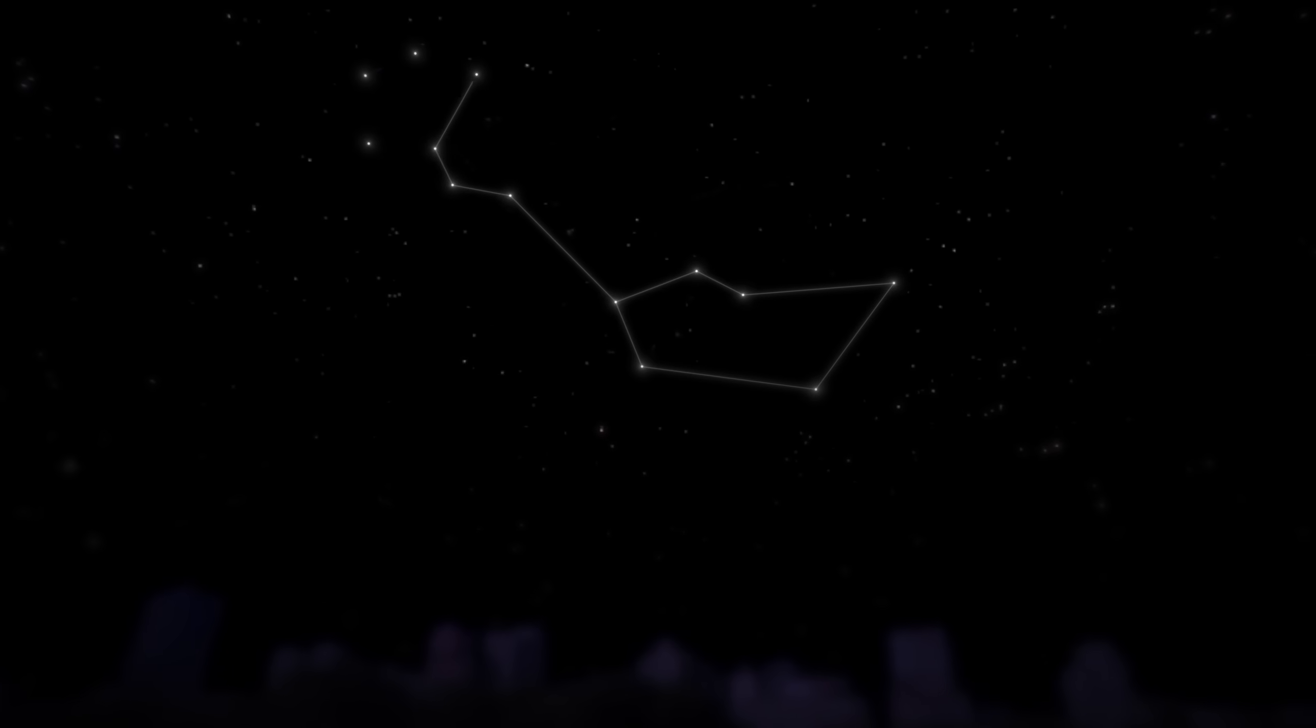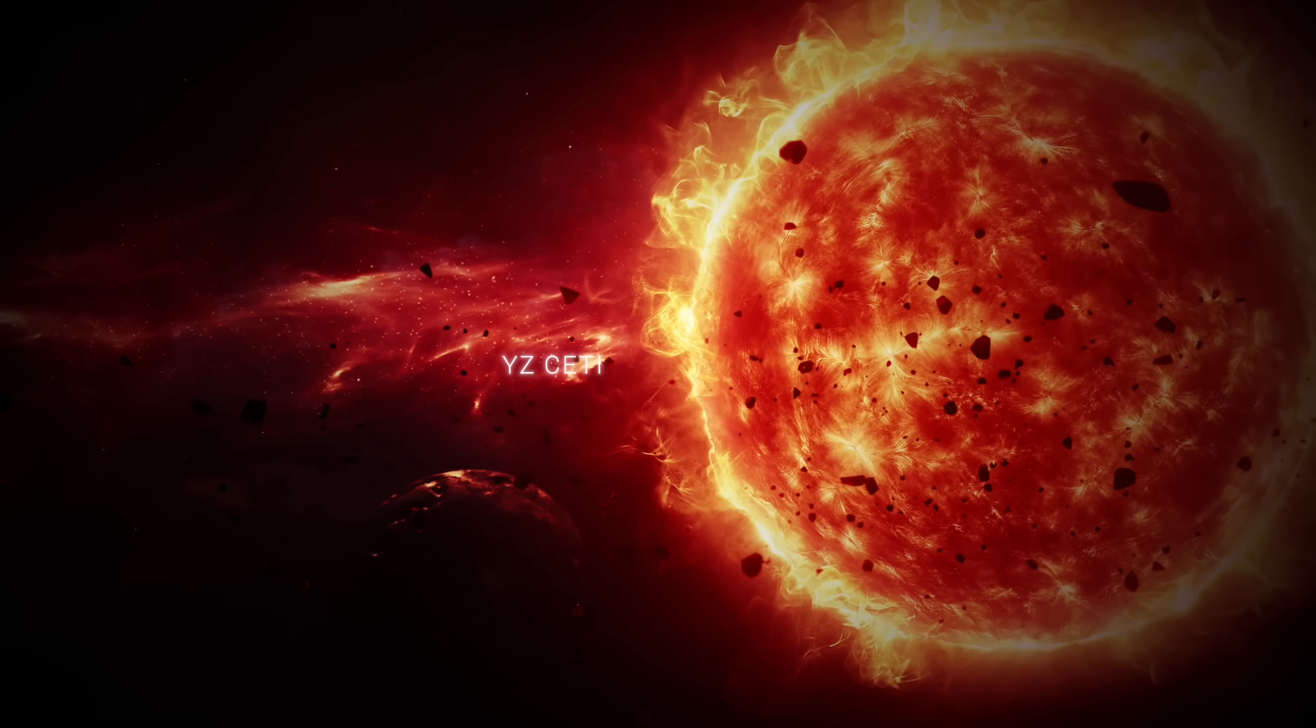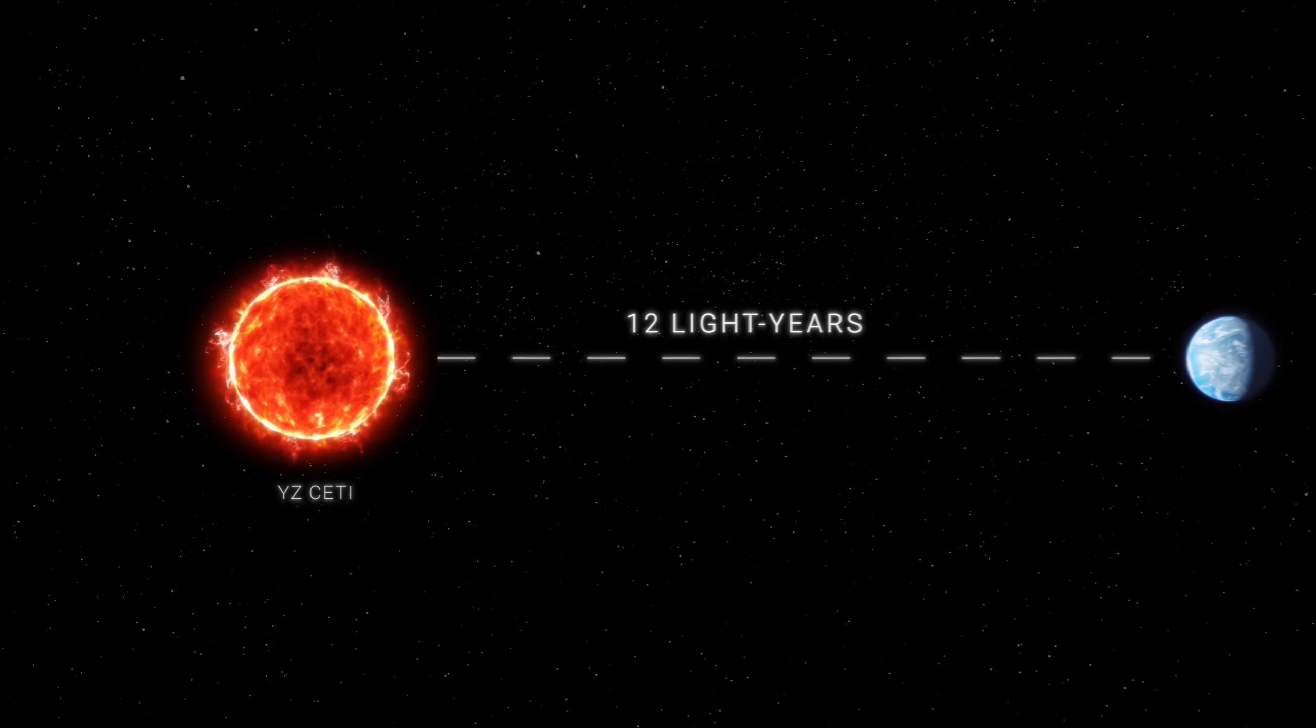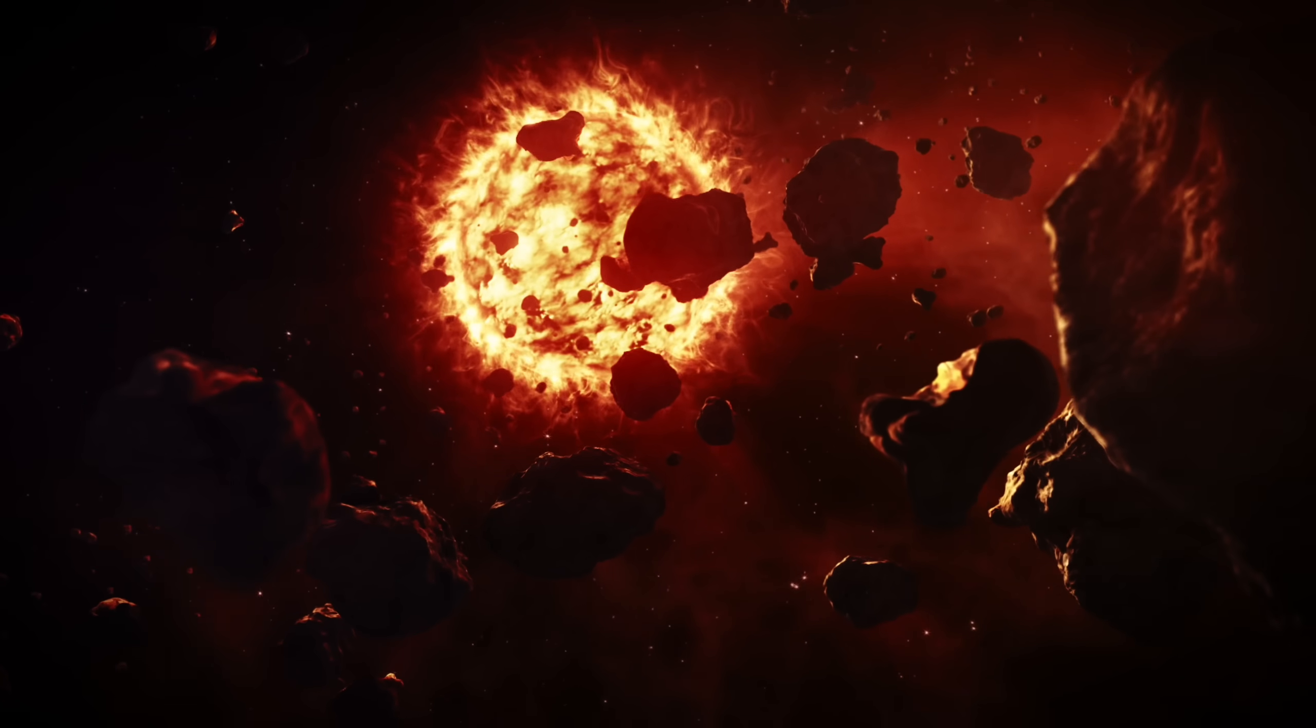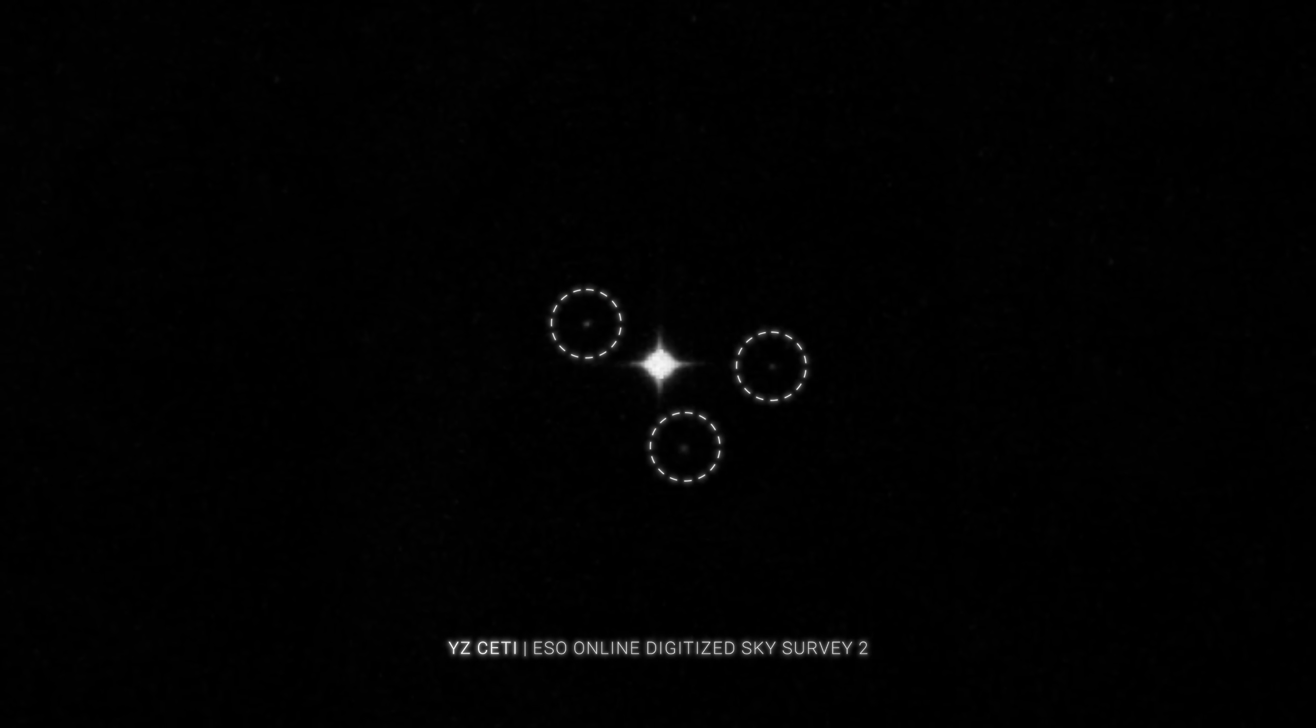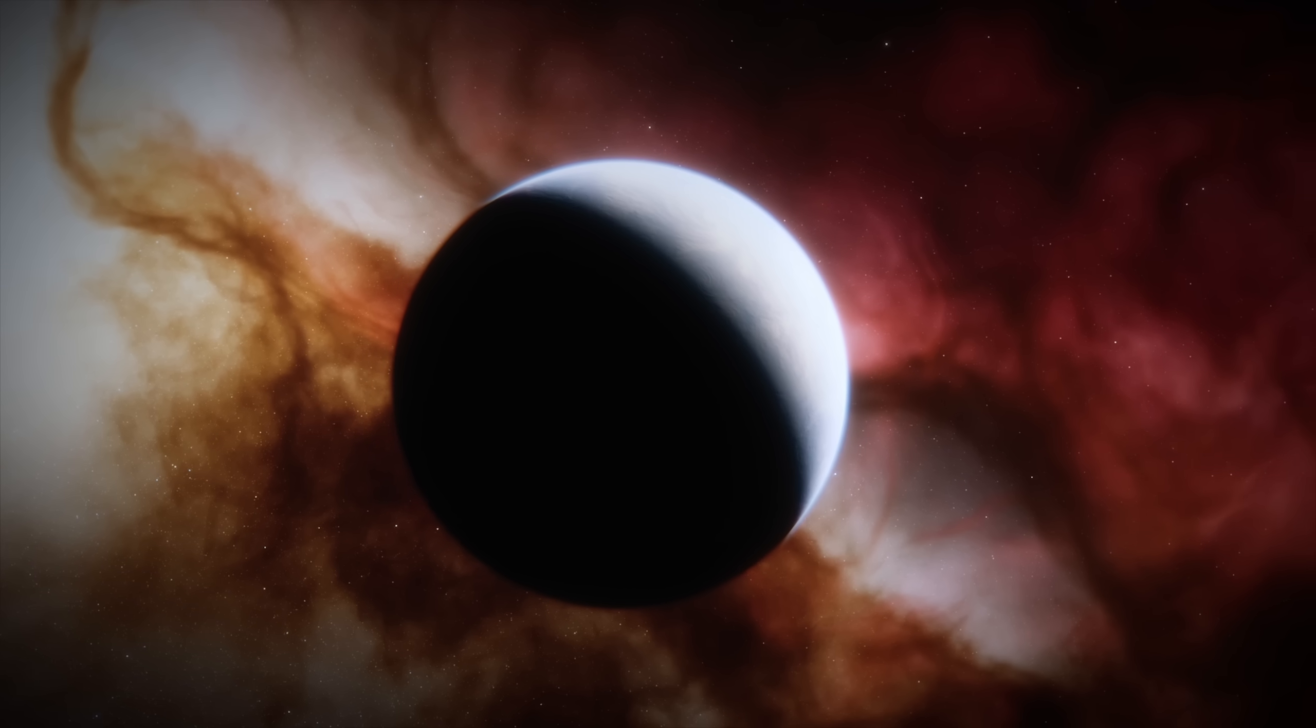Let us return to the constellation of Cetus, the sea monster, in which lies a star that whispers to us across light years. Her name is YZ SETI. YZ SETI is a red dwarf smaller and cooler than our sun. It is located 12 light years away, a close neighbor on a cosmic scale. But what makes YZ SETI truly fascinating is not the star itself, but what revolves around it. At least three exoplanets are known to orbit around YZ SETI, the innermost of which, YZ SETI b, is of particular interest.